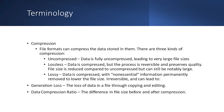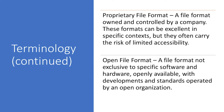Another term to keep in mind is data compression ratio, which is employed to describe the efficiency of the compression process. Another characteristic of file formats is whether the format is proprietary or open. A proprietary file format is owned and controlled by a company. These formats can be excellent in specific contexts, but they frequently entail the risk of limited accessibility due to other companies not supporting them, or their own companies regarding them as obsolete. Open file formats, on the other hand, are unexclusive to specific software and hardware, openly available with their developments and standards operated by an open organization.